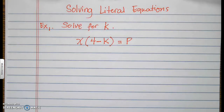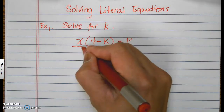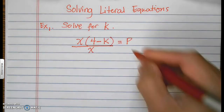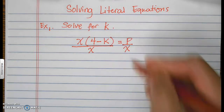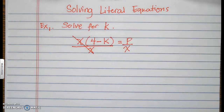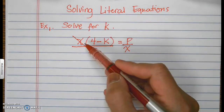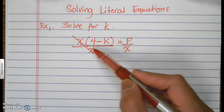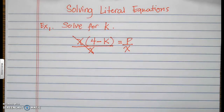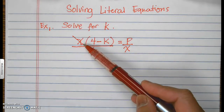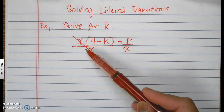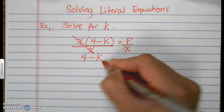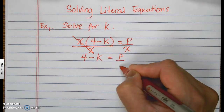The first thing we can remove is the x, and we can do that by dividing the left side by x. Whatever you do on the left, you must do on the right. This turns into a 1, so I have 1 in front of 4 minus k. I can just remove the parentheses because that's a positive 1 — distributing positive 1 to 4 minus k comes out the same: 4 minus k equals p over x.